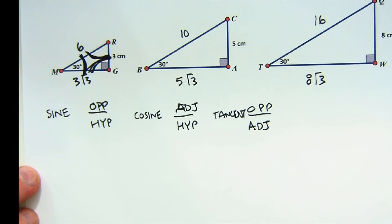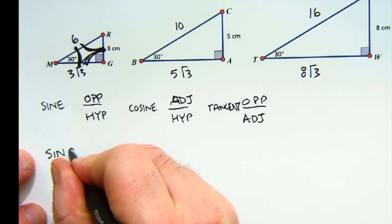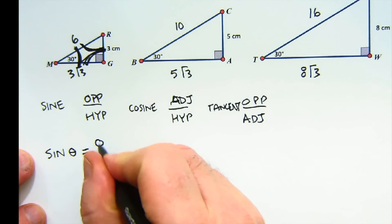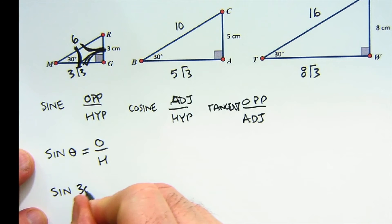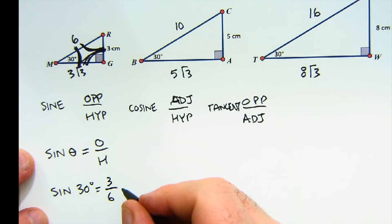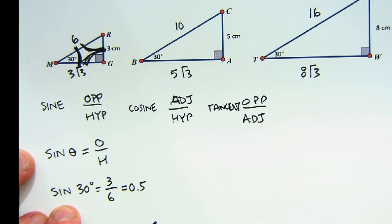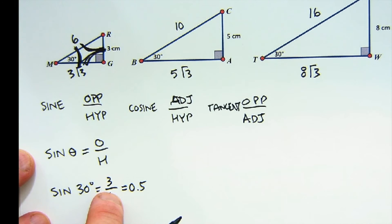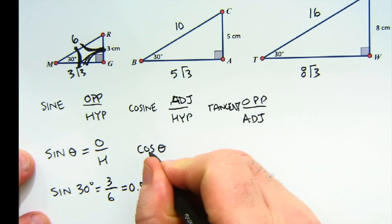If we wanted to know the sine ratio of an angle, it would be opposite over hypotenuse. In this case, the sine of a 30-degree angle would be 3 over 6, or as a decimal that would be 0.5. So what this means is that the sine ratio of a 30-degree angle is its opposite over its hypotenuse value.